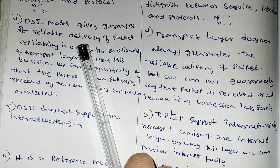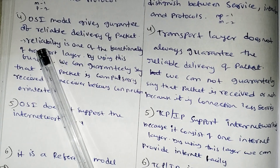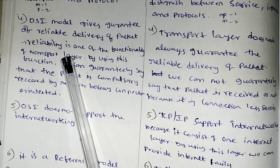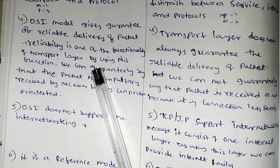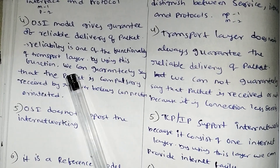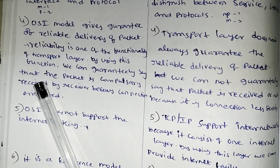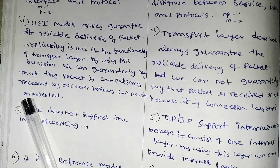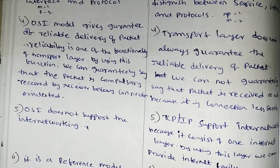OSI model gives the guarantee of reliable delivery of packets. Reliability is one of the functionalities of the transport layer. By using this function, we can guarantee that the packet is compulsorily received by the receiver, because it is connection-oriented. The OSI model guarantees reliable delivery of packets.